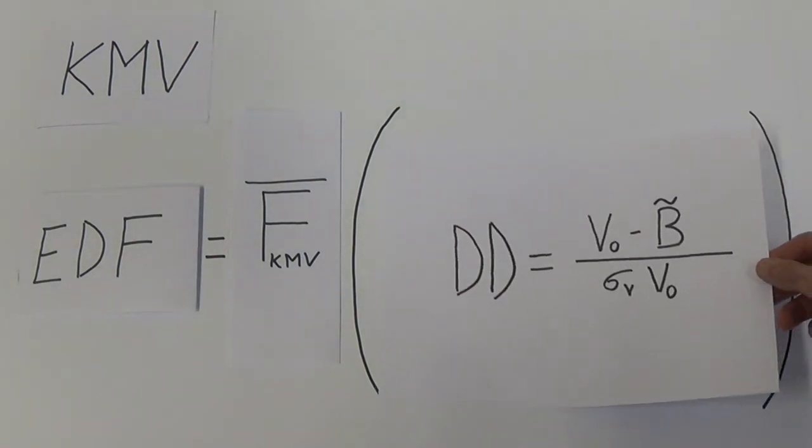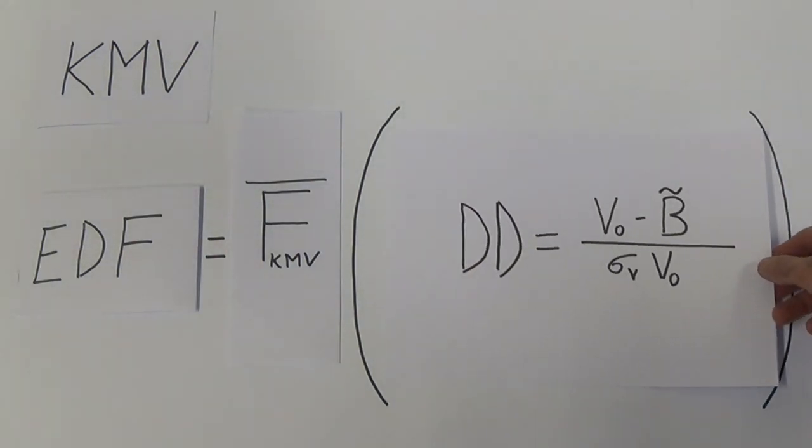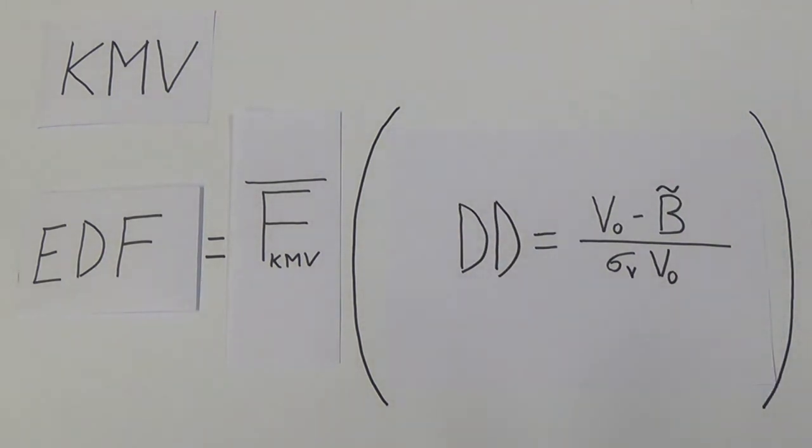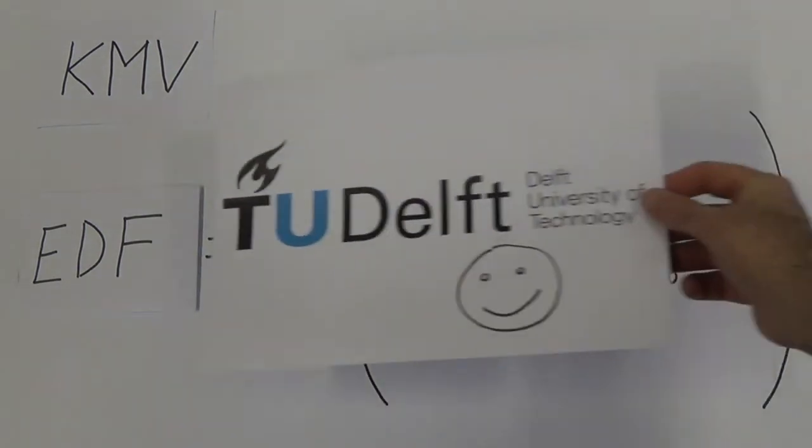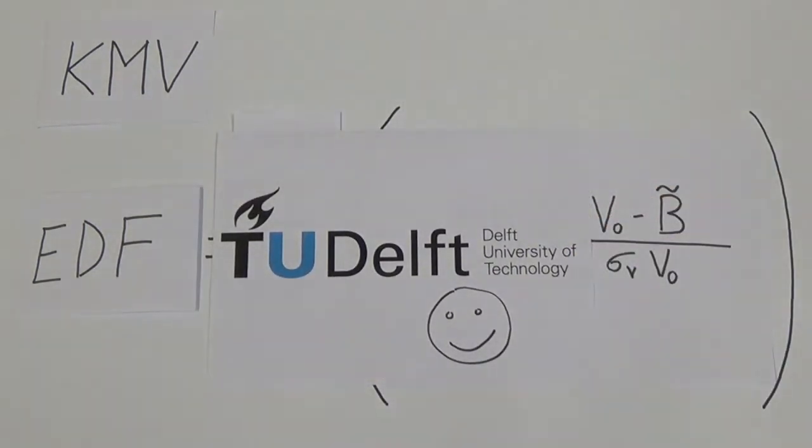Then, we compute this function in the distance to default of the company. V0 and sigma V are estimated using a special algorithm developed by KMV. And this is it. This is how to transform Merton's model into the KMV one.